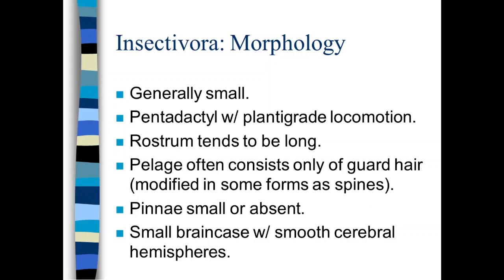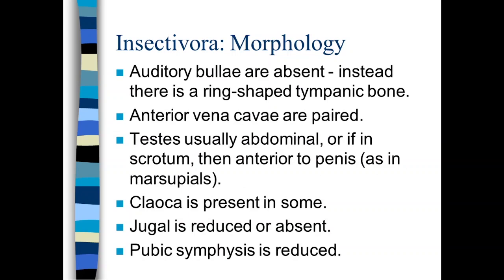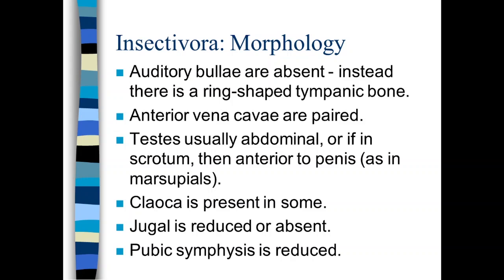They tend to be small, pentadactyl, plantigrade locomotion. We covered all of that. We talked about the difference in hair, the fact they have only guard hair, the reduced or absent pinnae, and then a small brain case with smooth cerebral hemispheres. We talked about the absence of auditory bulla, the fact that testes are abdominal, or if they're abdominal, they're very marsupial-like, and that the scrotum is anterior to the penis. Some have a cloaca, and the jugal, importantly, is reduced or absent.